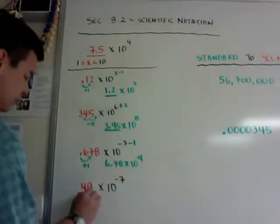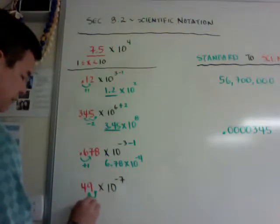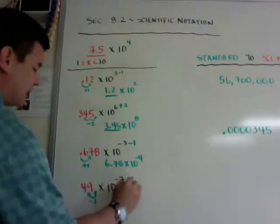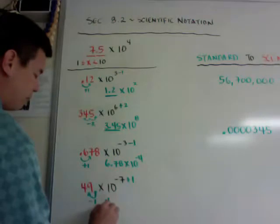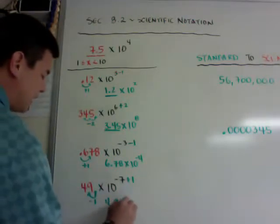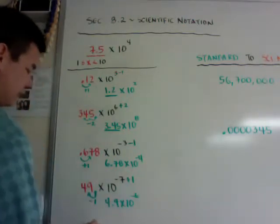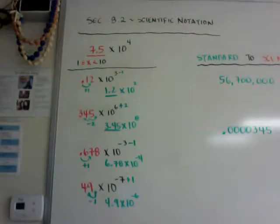Over here, I got my decimal here, so I need to go this way. So I got a minus 1 here, so I plus 1 there, so I get 4.9 times 10 to the negative 6th power. That's how you change it into scientific notation if this number is not a legitimate number.